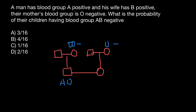He belongs to blood group A with genotype A-O, meaning he got the A allele from his father. This doesn't mean his father belongs to blood group A — the father could also be blood group AB. So the father can be of the following genotypes: A-A, A-O, or AB. In all three cases, he can give his son the A allele. From the mother's side, the son can only receive the O allele.